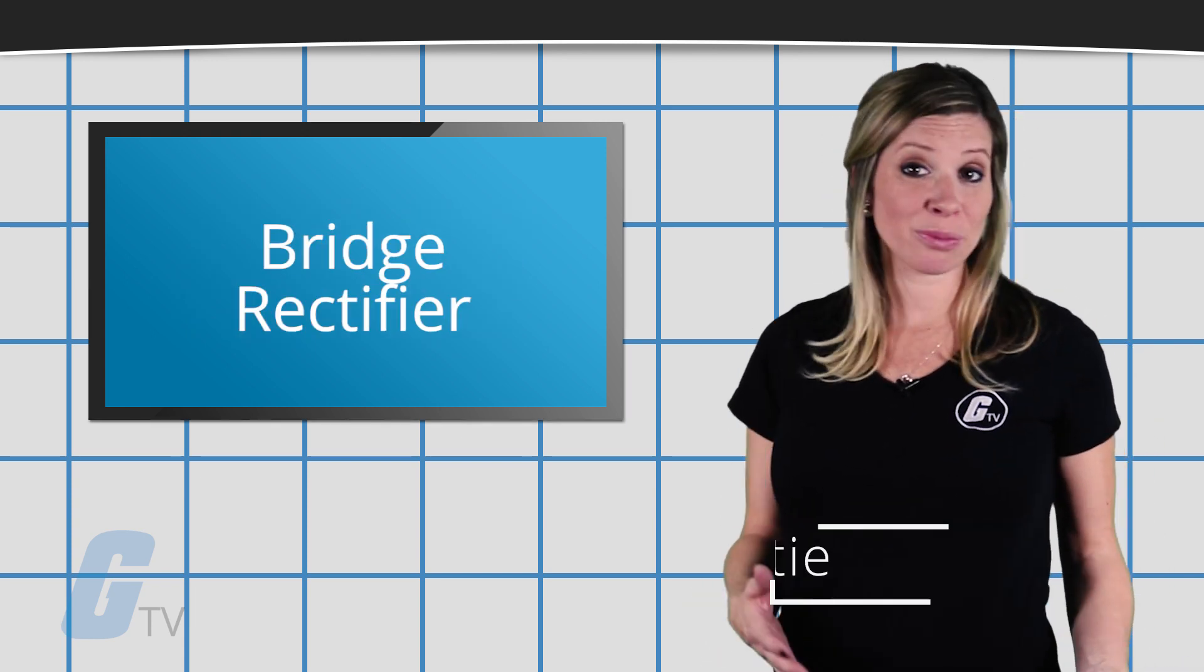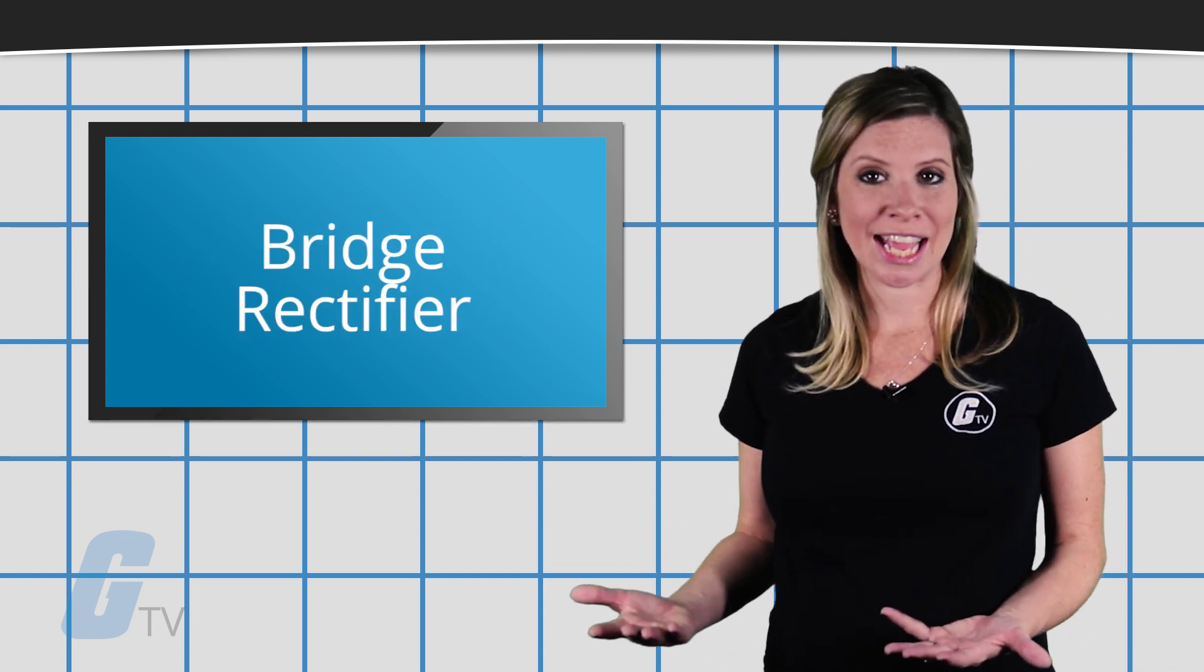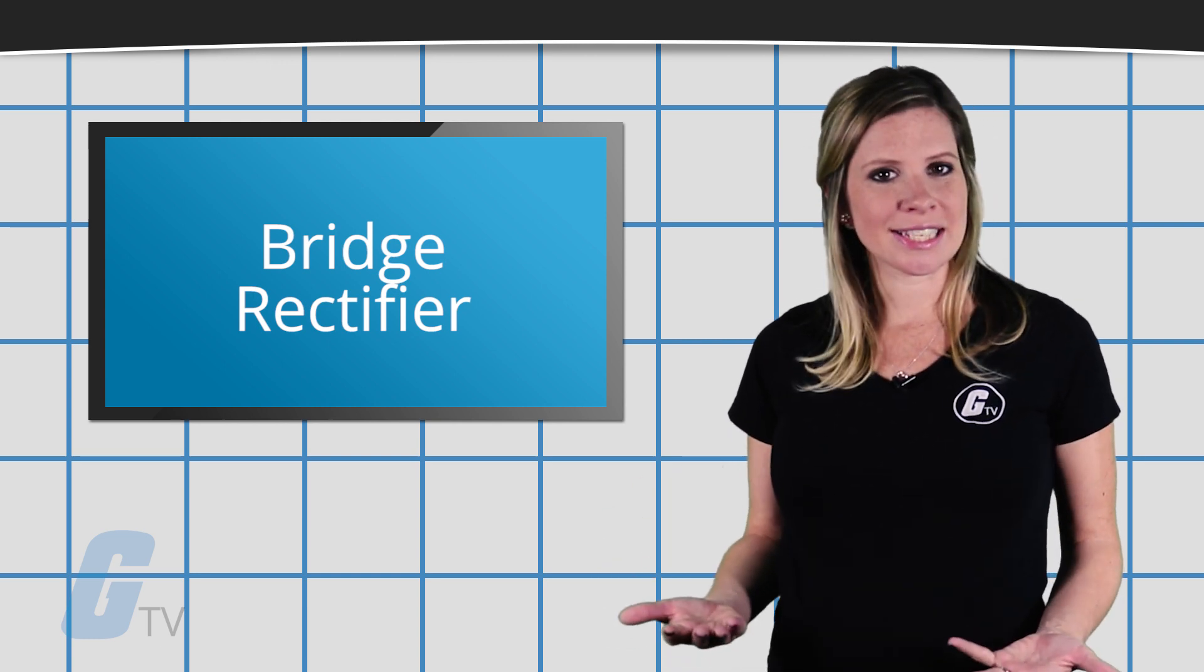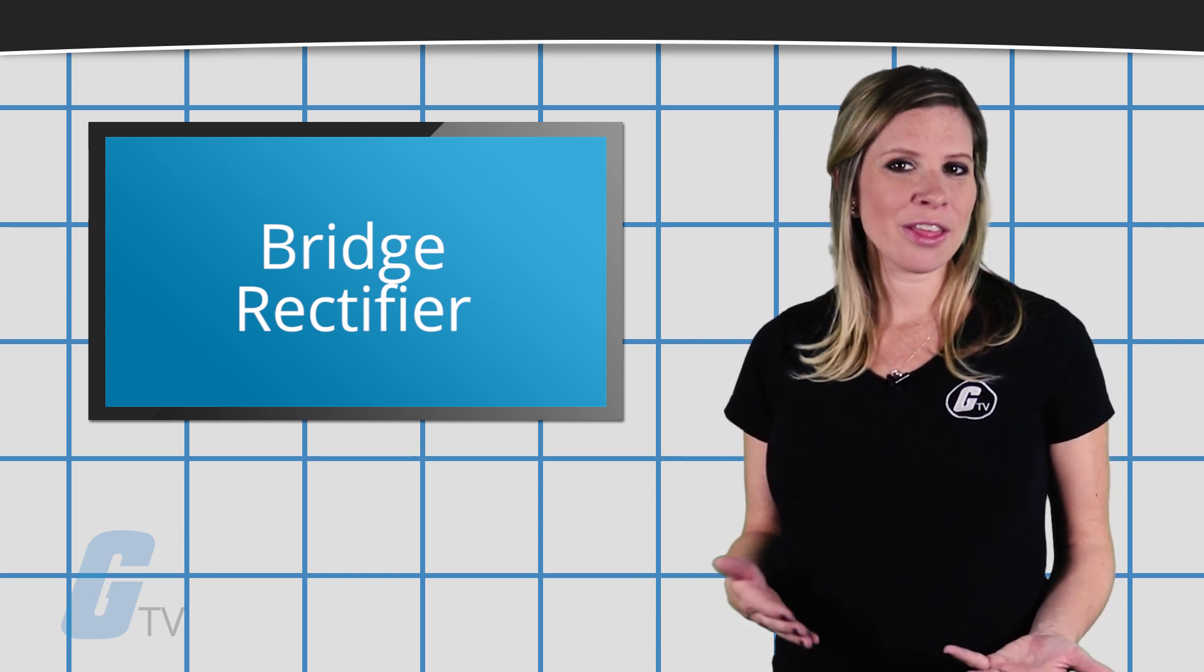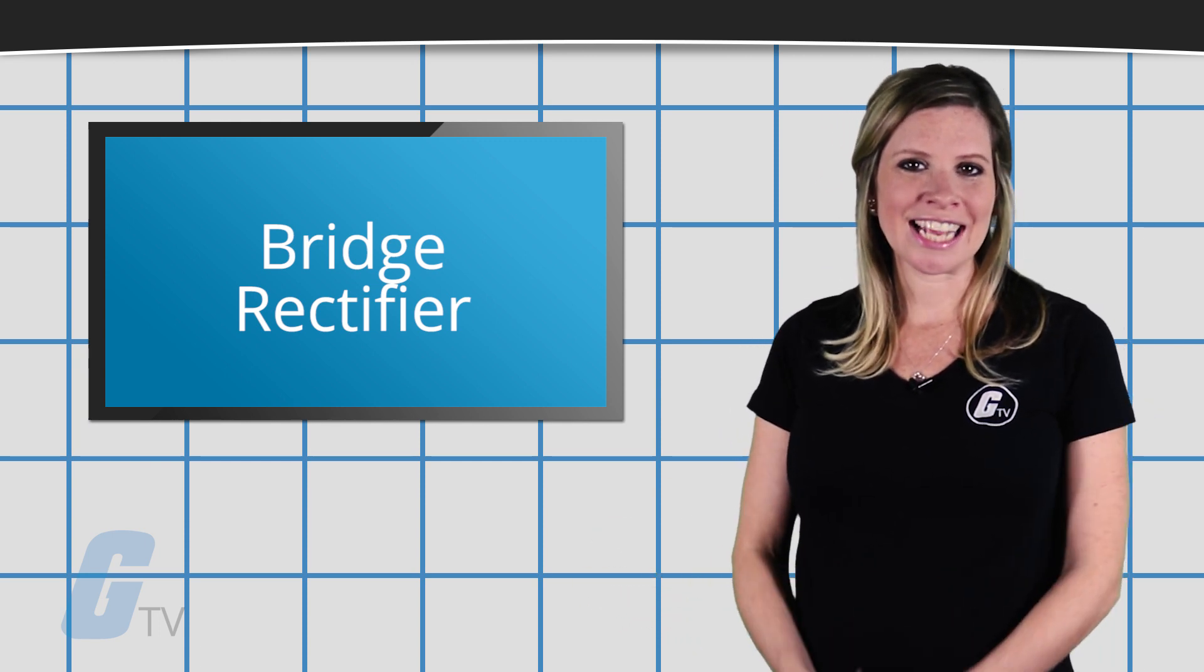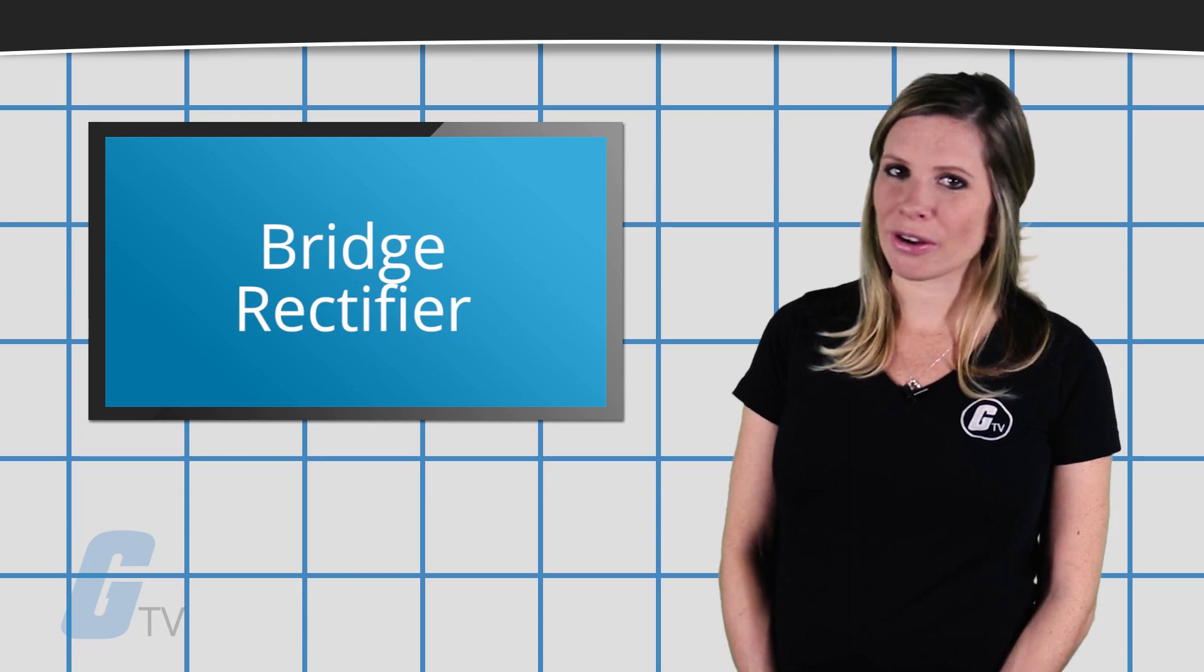A bridge rectifier is an arrangement of four or more diodes in a bridge circuit configuration, which provides the same output polarity for either input polarity. They are used for converting AC current into DC current.